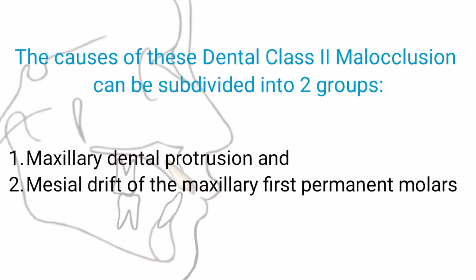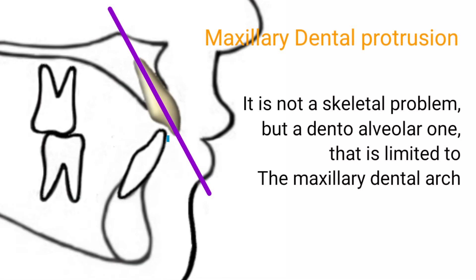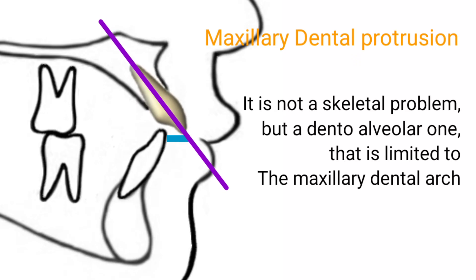The causes of dental Class II occlusion can be subdivided into two groups: Maxillary Dental Protrusion and Mesial Drift of the Maxillary First Permanent Molar. Maxillary Dental Protrusion is not a skeletal problem but a dental alveolar one that is limited to the maxillary dental arch.